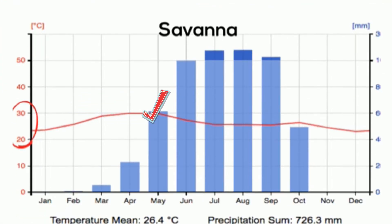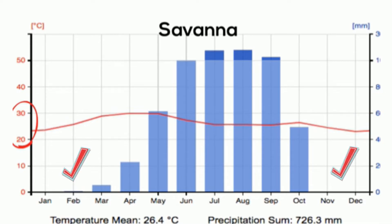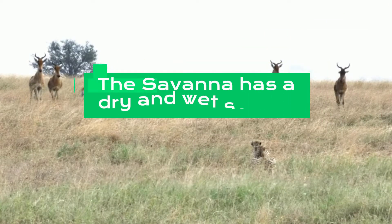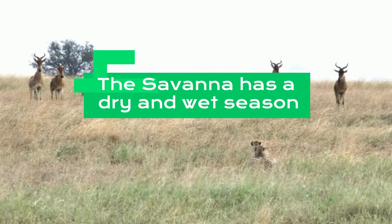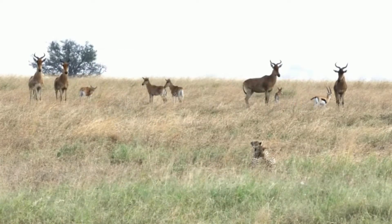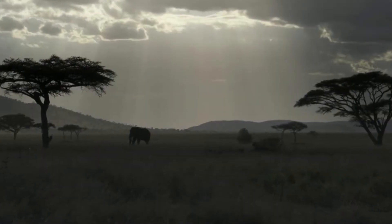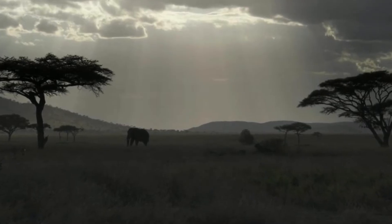There are actually two different seasons in a savanna: a very long dry season in the winter and a very wet season in the summer. During the dry season a savanna may receive only 4 inches of rain, while during the wet season it may rain often and this biome may receive up to 25 inches of rainfall.